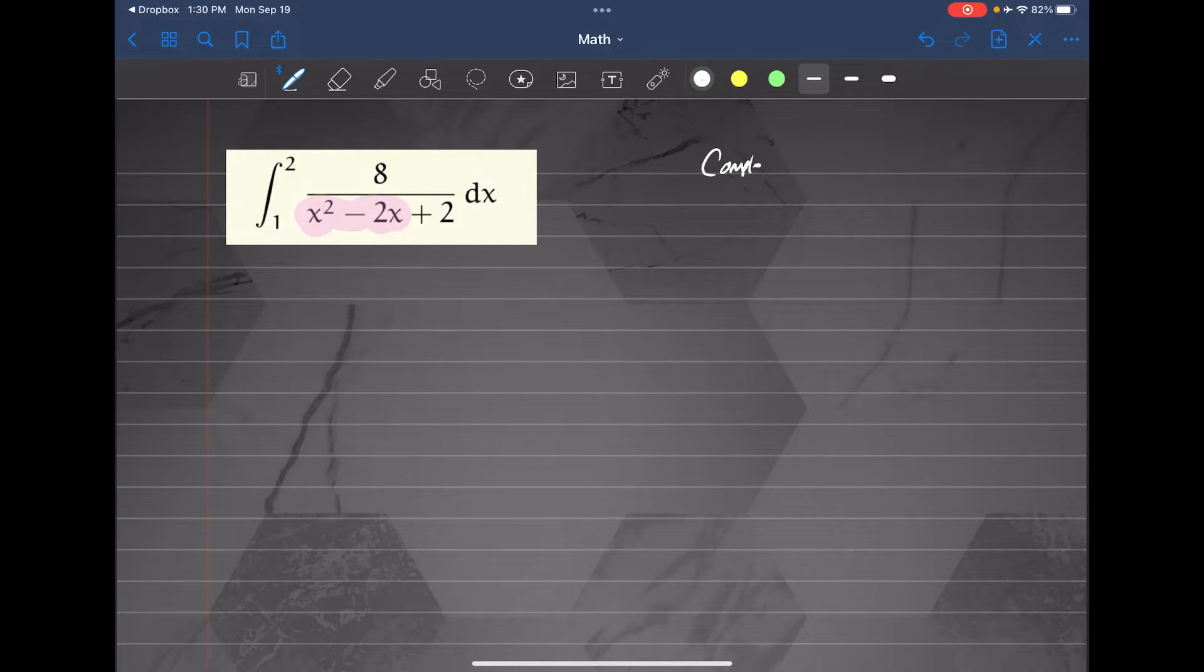So we're going to complete the square. Now if you want to know how to complete this square, I'll leave a link in the description box so you can check it out. So let me show you how this is going to be done. You rewrite x squared minus 2x. Leave a space because we're going to add and subtract extra term plus 2. So I'm just rewriting the same thing with a little space in between them.